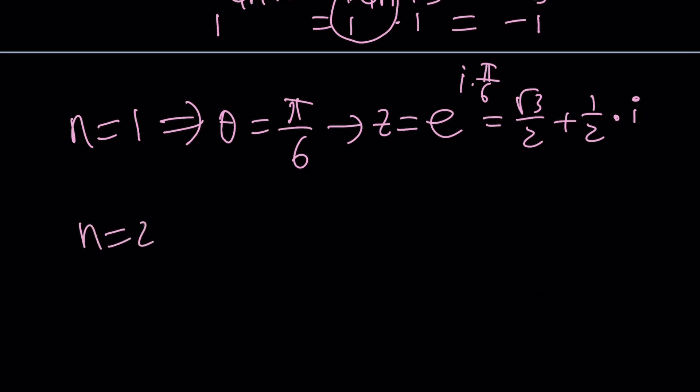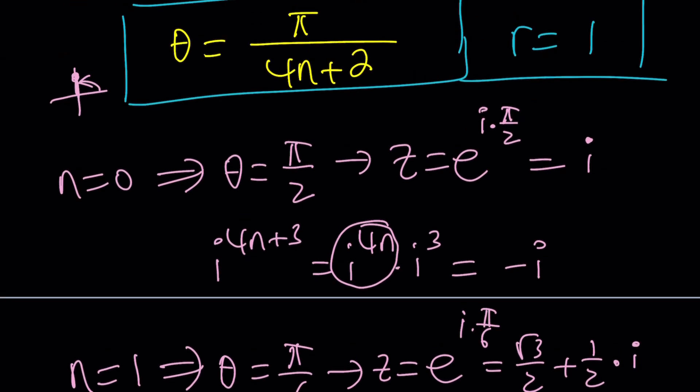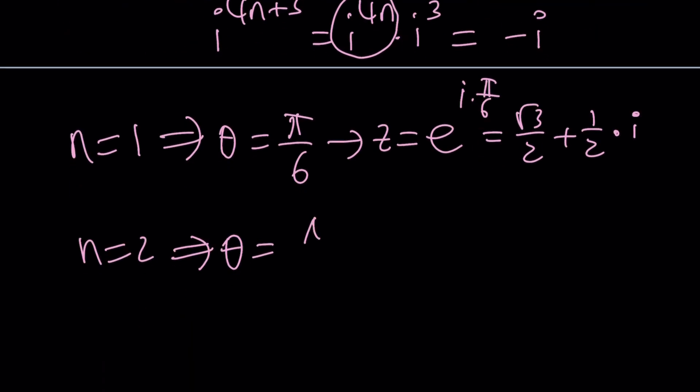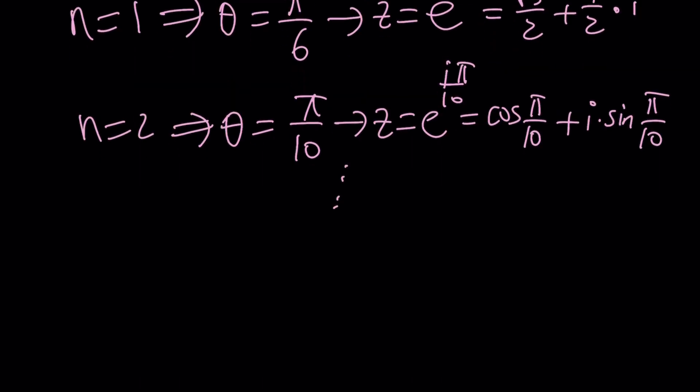Anyways n equals 2 is going to give us something more interesting because this time theta is going to be pi over 10 which is kind of like a semi-special angle. Z is going to be e to the power i pi over 10 or I can write it as cosine pi over 10 because I don't know the value by heart. Cosine 18 you probably memorize it right? If you do please let me know. And this is sine pi over 10. And is it going to work? It should right? Go ahead and test it out. But in general z can be written as e to the power i pi over 4n plus 2 where n is an integer. I didn't check the negative integers but hopefully they are going to work.